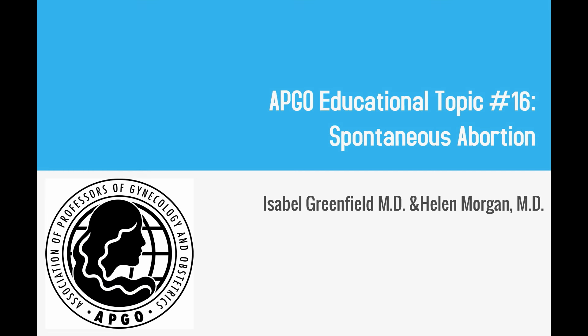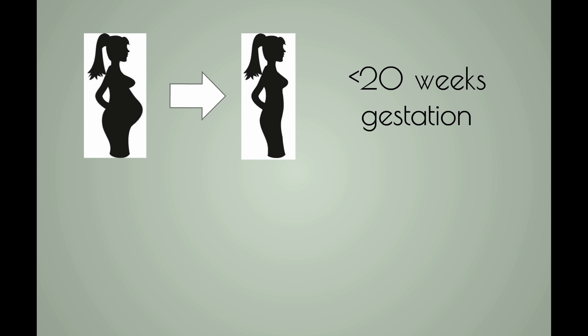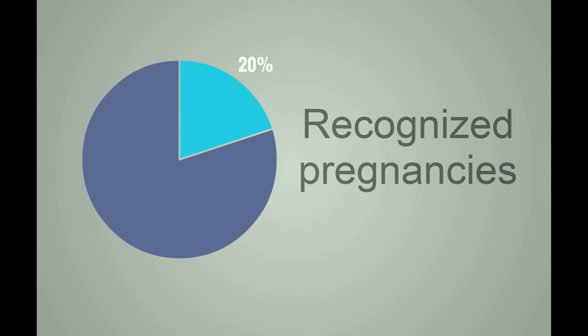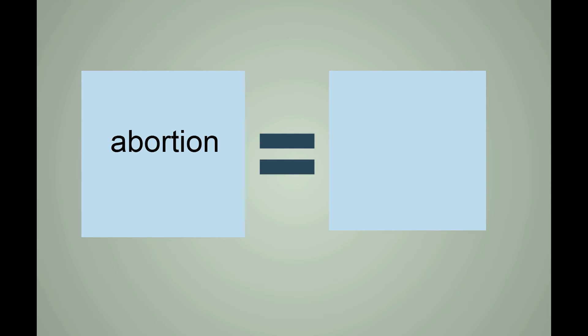EPCO educational topic number 16: spontaneous abortion. Spontaneous abortion is the loss of a pregnancy before 20 weeks gestation, and it affects up to 20% of recognized pregnancies. Note that medically, the term abortion refers to miscarriage.